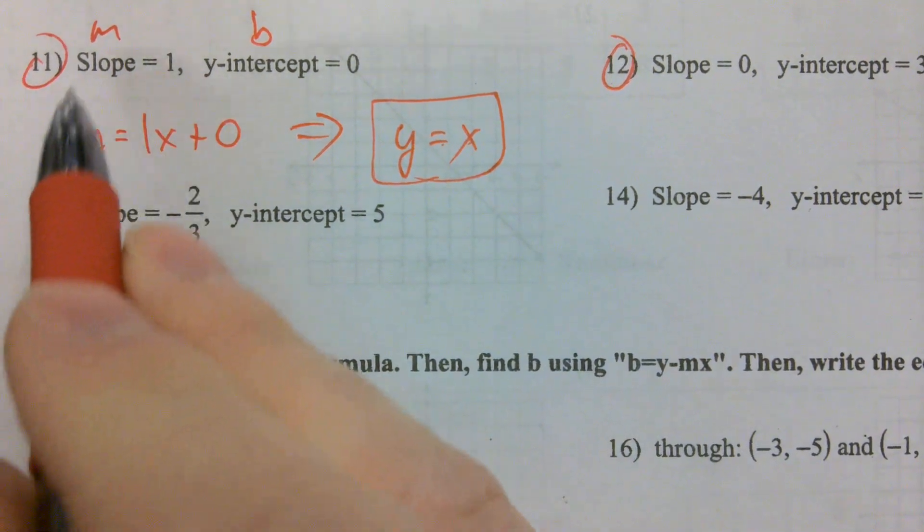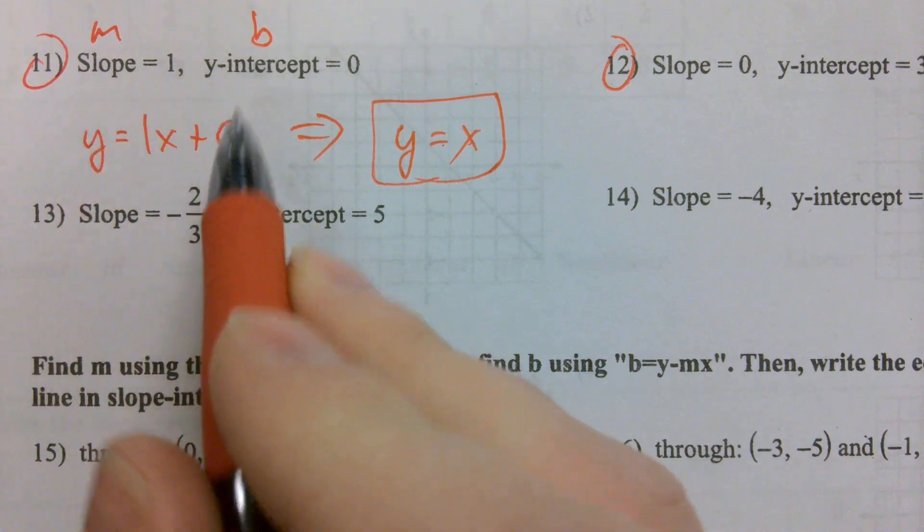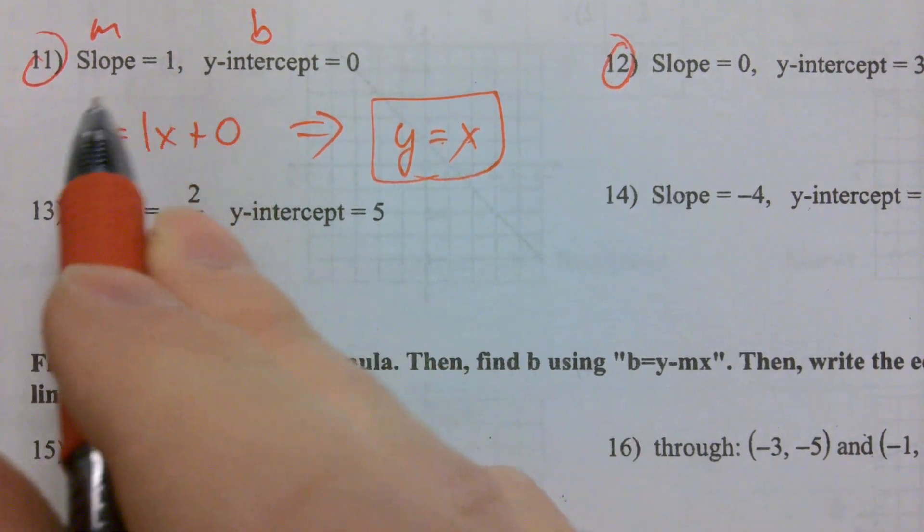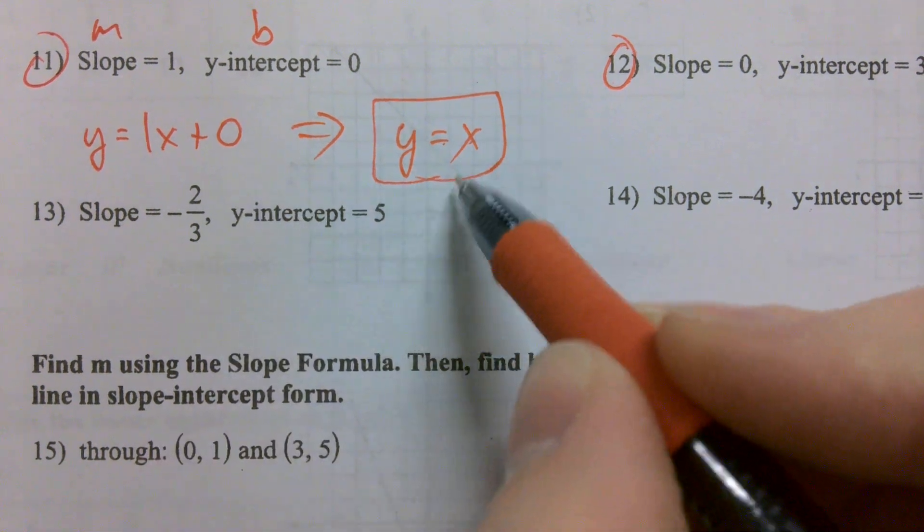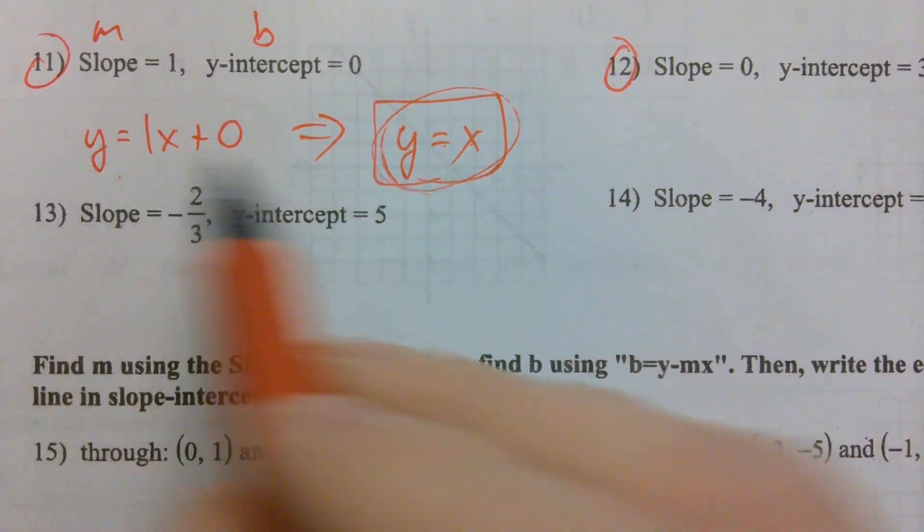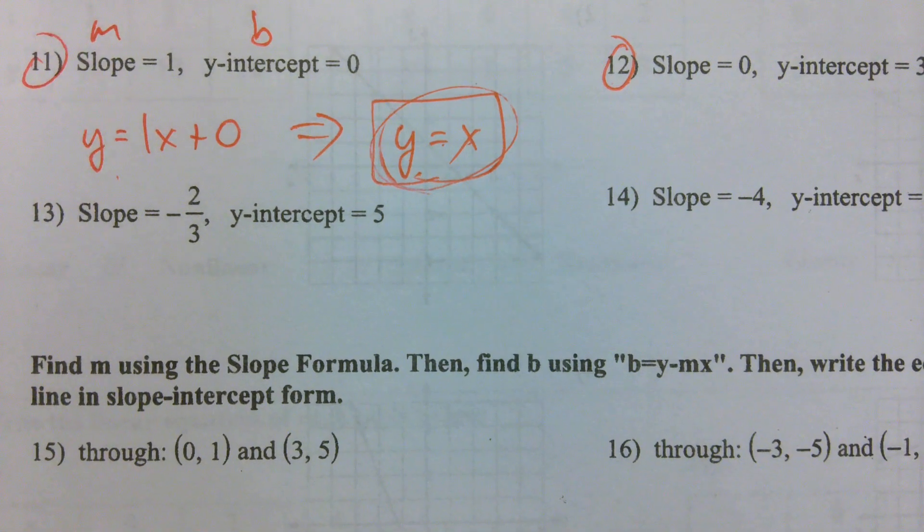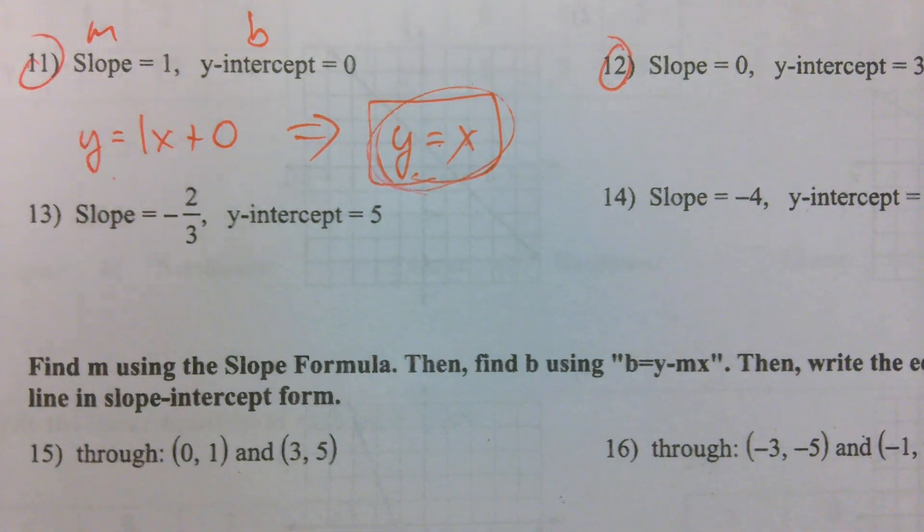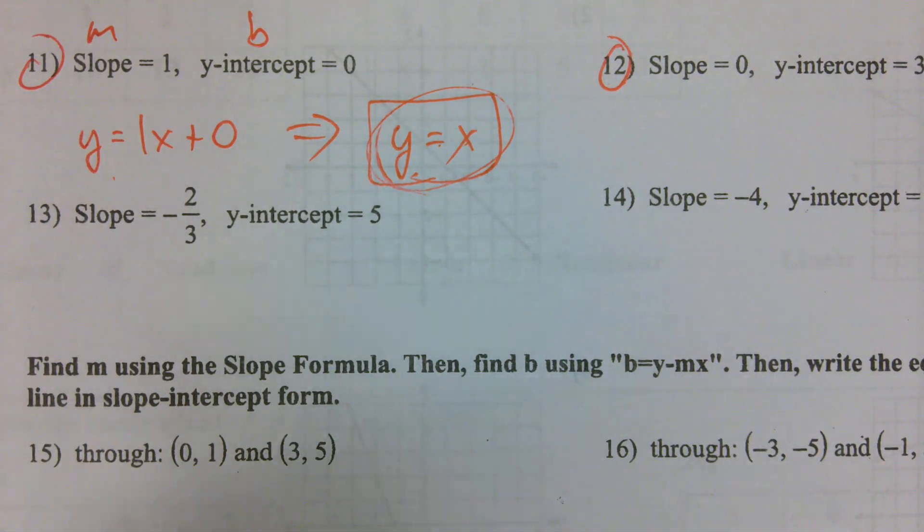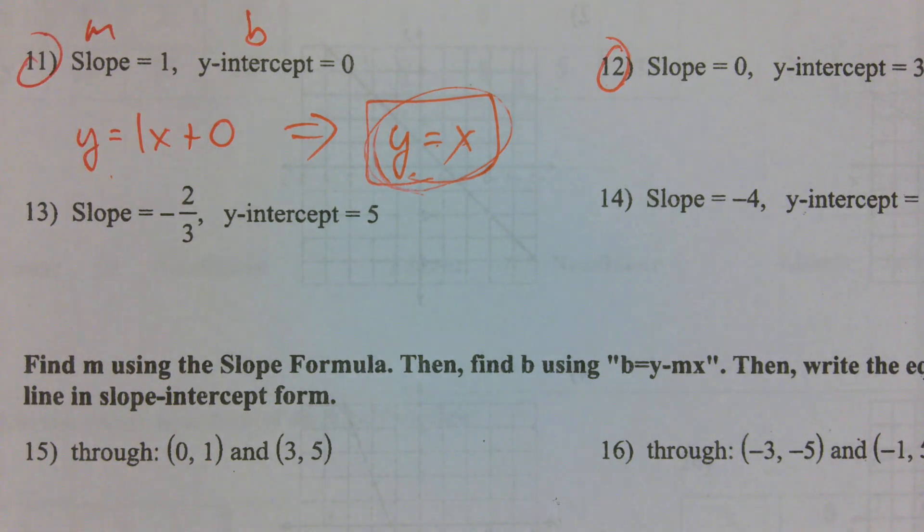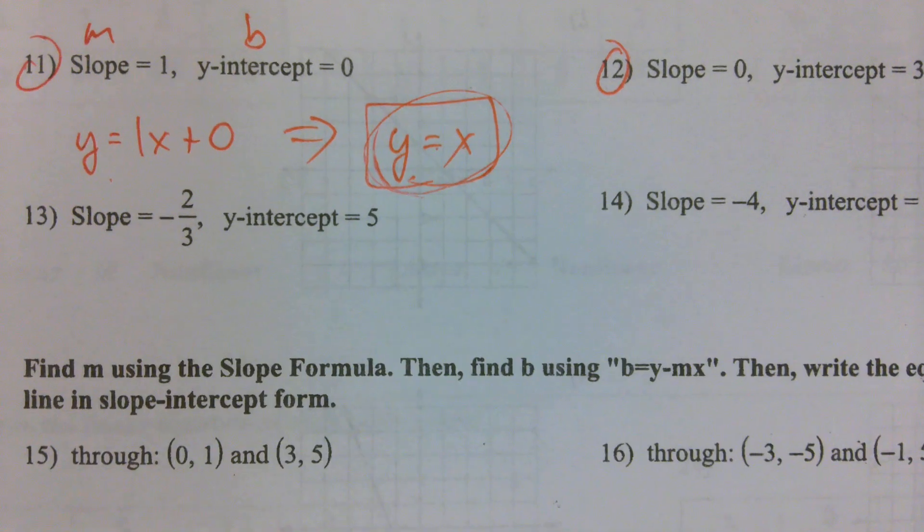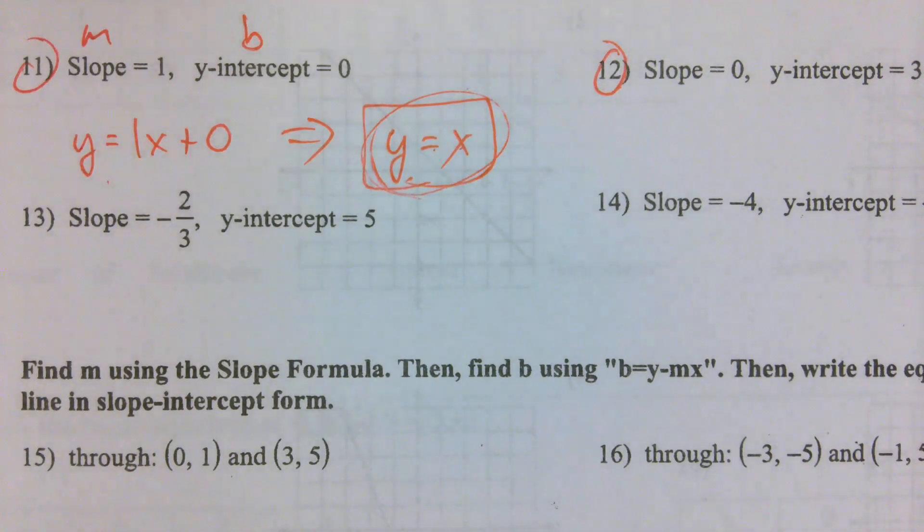Now, is this technically wrong? No, this is correct. But you're not going to see this as a multiple choice option on the test. You're going to see something like this. So we've got to know that this is the same as that. If it was a free response test and you wrote this, full credit, totally right. But we're not going to see this on the final.